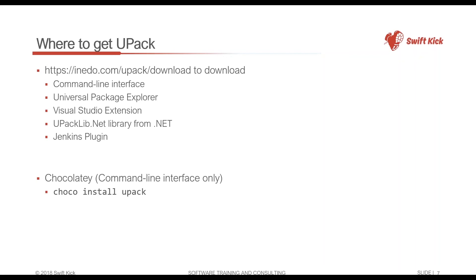upack is free to anyone that wants to use it. You can download it at neo.com/upack/download. There are several tools available: the command line interface (upack.exe), the Universal Package Explorer — which just got updated today — a Visual Studio extension for building and deploying upack packages, a upack .NET library so you can build your own systems that create and publish upack packages, and a Jenkins plugin so you can incorporate upack into your existing build process.